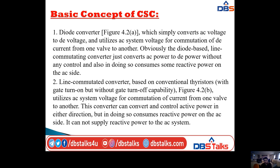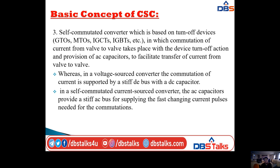Coming to the second type — the line-commutated converter — it is totally based on conventional thyristors with gate turn-on but without gate turn-off capability. It utilizes AC system voltage for commutation of current from one valve to another. This converter can convert and control active power in either direction, but in doing so consumes reactive power on the AC side. The line-commutated converter cannot supply reactive power to the AC system; it only consumes reactive power on the AC side.